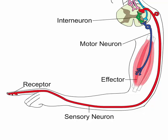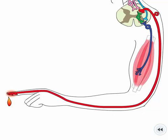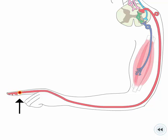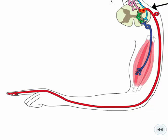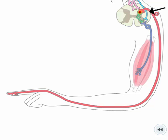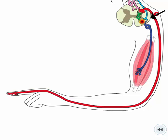We will now follow a reflex arc starting at the receptors. Receptors located in the skin or sense organs detect a stimulus and create an impulse. Sensory neurons conduct nerve impulses towards the central nervous system — the brain and spinal cord. Interneurons in the central nervous system connect sensory neurons to motor neurons.